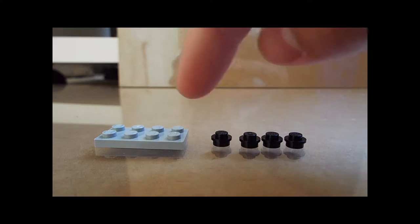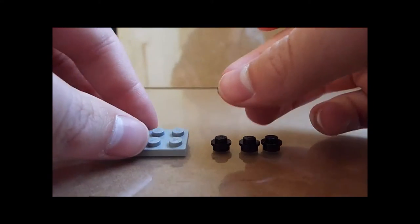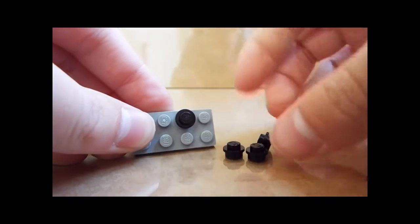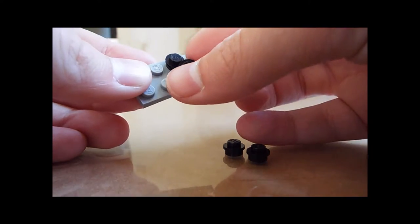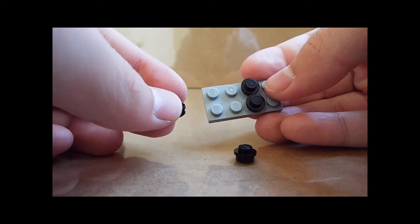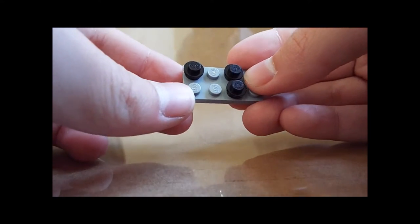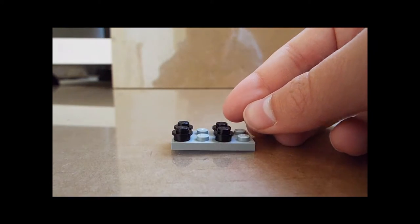So we're going to start by taking the 2x4 piece and these four black studs. Move it one over, and then place two of these right here. And then go to the back and put these two studs here. So that's what you have so far.